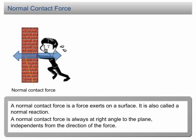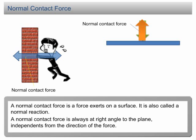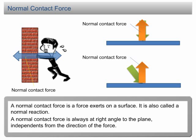A normal contact force is always at right angle to the plane, independent from the directions of the force. For example, if the force is perpendicular to the plane, the normal contact force is at right angle to the plane. If the force is not perpendicular to the plane, the normal contact force will still be at right angle to the plane.